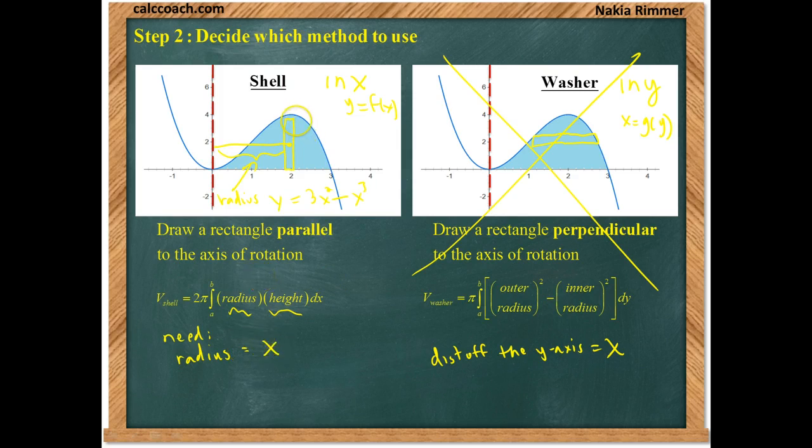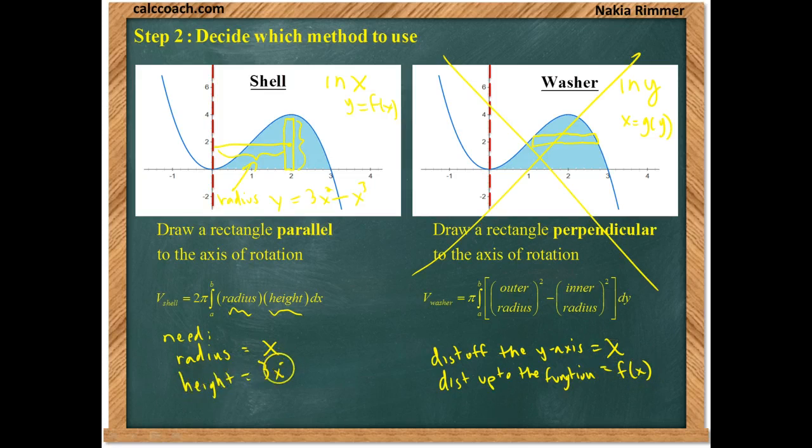The height of the rectangle is just the distance up to the function. And so, the distance up to the function, in this case, is just our f of x, which is going to be 3x squared minus x cubed. So, let's go with this, and now let's set up the calculation.